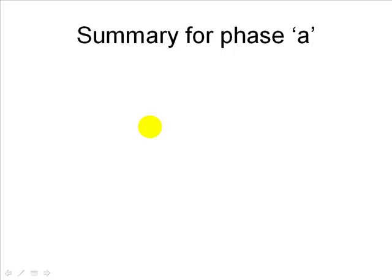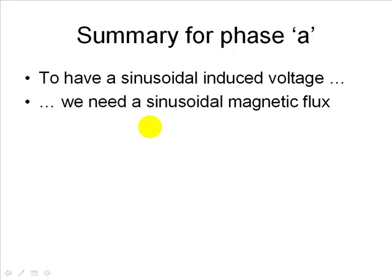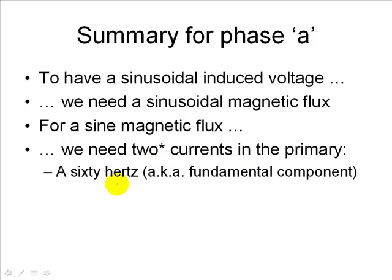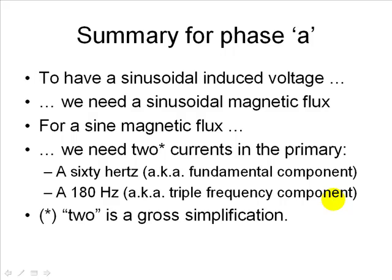Let's summarize for phase A. To have a sinusoidal induced voltage in the coils, we need a sinusoidal magnetic flux. But for a flux that is changing sinusoidally with time, we need two currents in the primary. A 60 Hz current, also known as the fundamental component of the magnetization current, and a 180 Hz current, the triple frequency component. As I said before, two is an approximation.